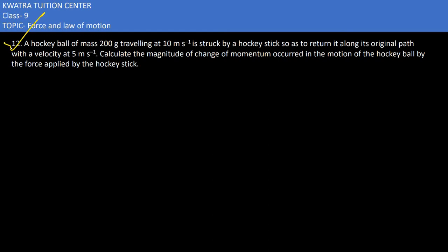In problem twelve, a hockey ball of mass 200 grams is traveling at 10 meters per second. The mass is 200 grams and we should ensure it must be in kg. How would you write that?